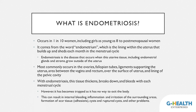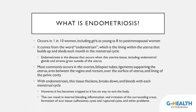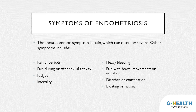With endometriosis, this tissue thickens, breaks down, and bleeds with each menstrual cycle. However, when this tissue is elsewhere in the body — not in the uterus — it becomes trapped and does not have a way to exit the body. The results of this can be internal bleeding, inflammation, irritation around the surrounding areas, the formation of scar tissue or adhesions. It can also form cysts that can rupture and spread endometriosis elsewhere.